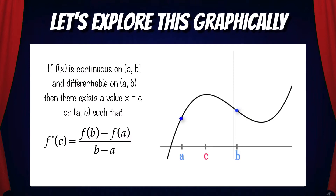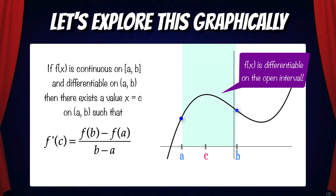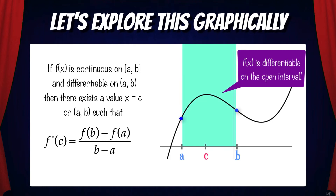Here we have a function f. As you can see, it's continuous on the closed interval a to b and differentiable on the open interval a,b. There aren't any holes in the graph, any corners, any cusps, or any discontinuities. The graph is smooth and continuous.